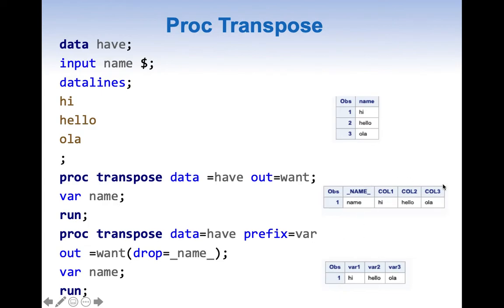This simply transposes data like this. If you look into this, there are a couple of things to observe. It gives a new column which is underscore name underscore, and the transposed columns have names col1, col2, col3.